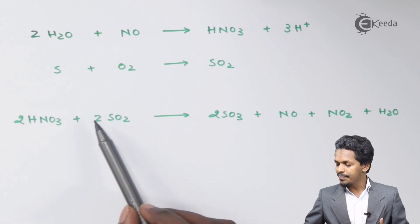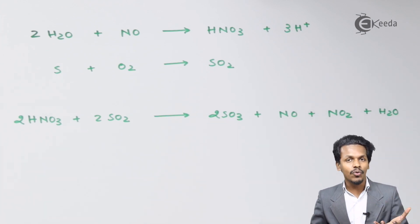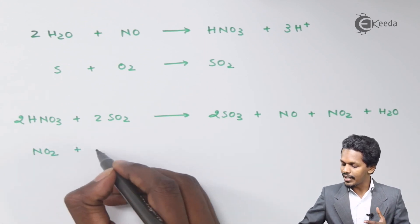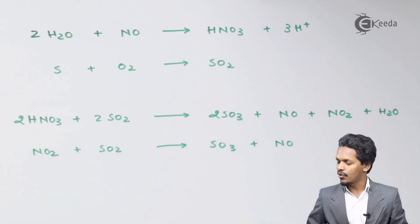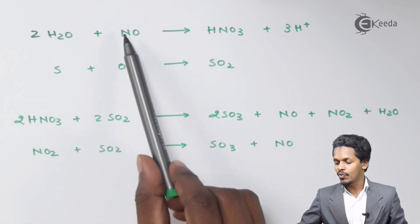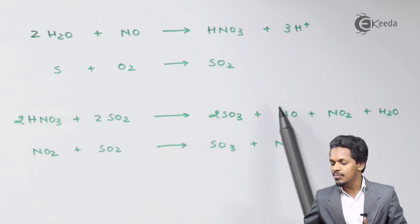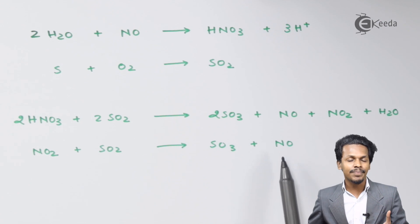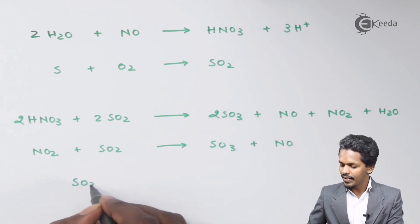Meanwhile, the NO₂ produced is also helpful in oxidizing SO₂ to SO₃. So NO₂ can react with SO₂ to form SO₃ along with NO (nitric oxide). This nitric oxide is then used in the first step to obtain HNO₃. When that HNO₃ reacts with SO₂ again, NO is produced once more — so NO is acting like a catalyst, being regenerated in both reactions. The main product we get is SO₃.